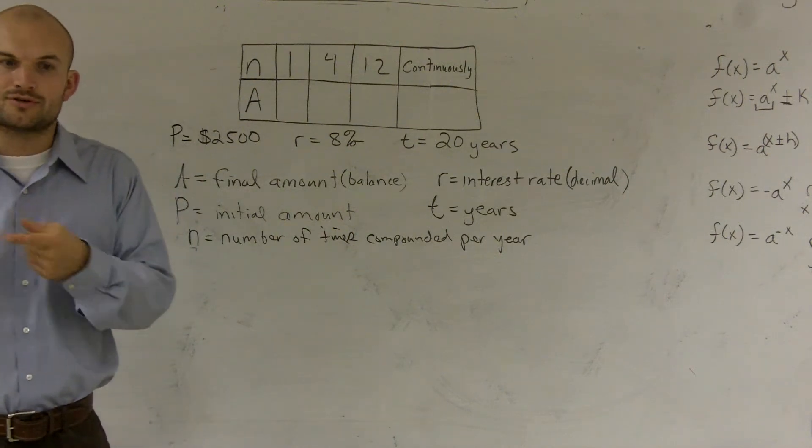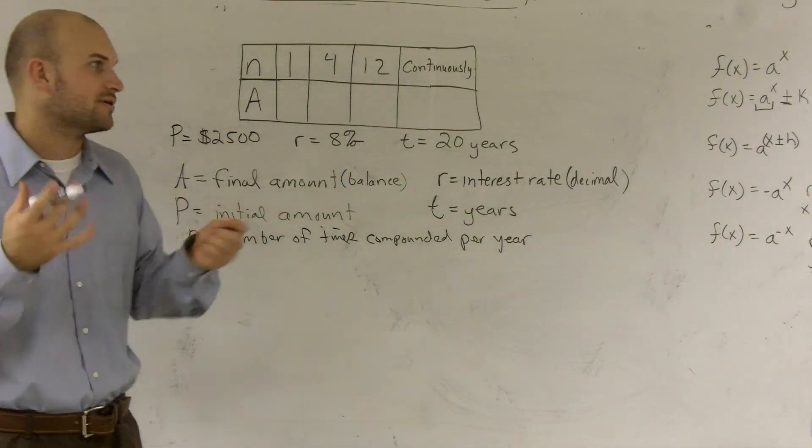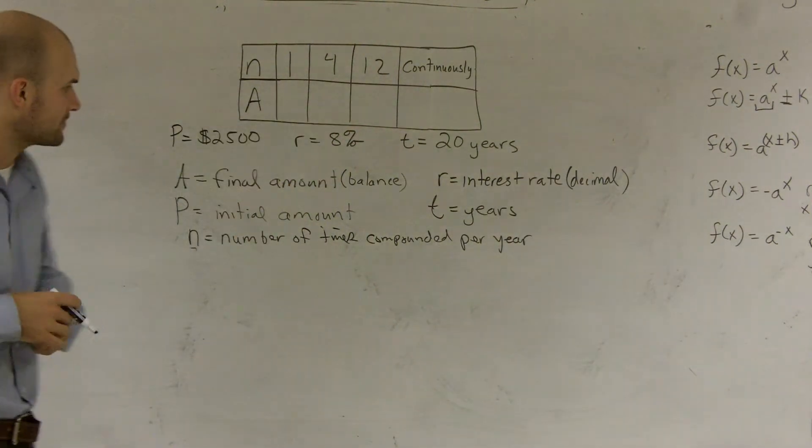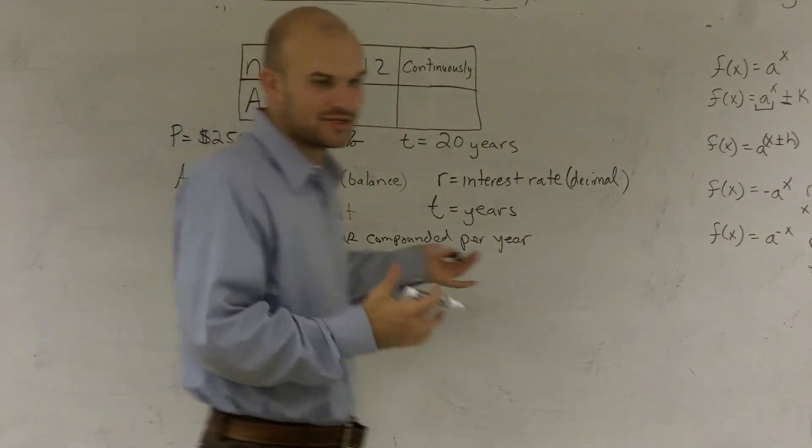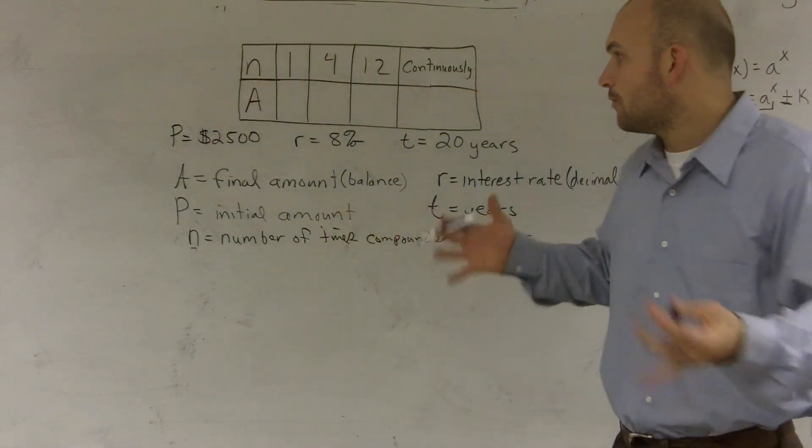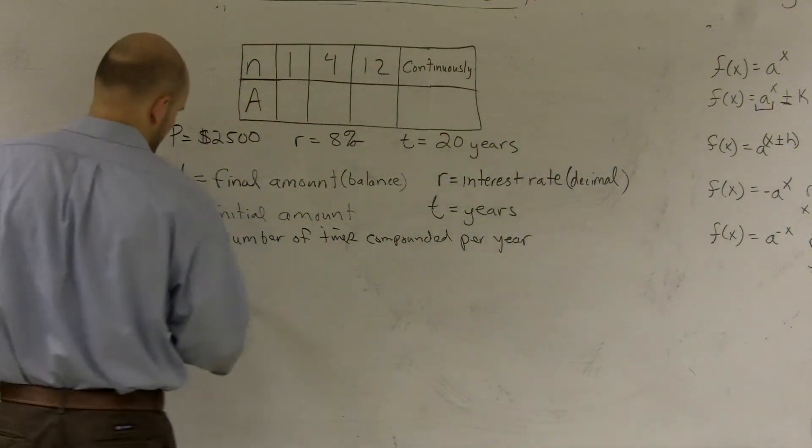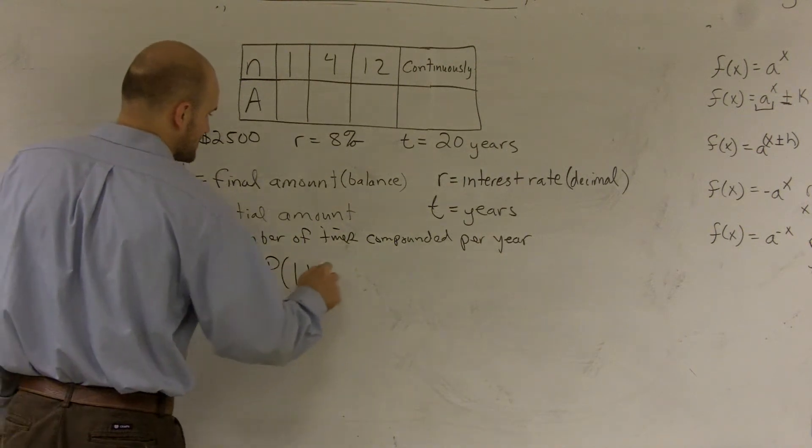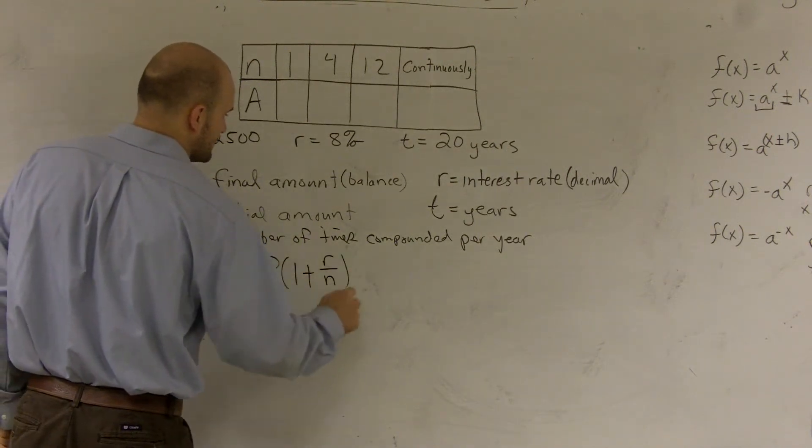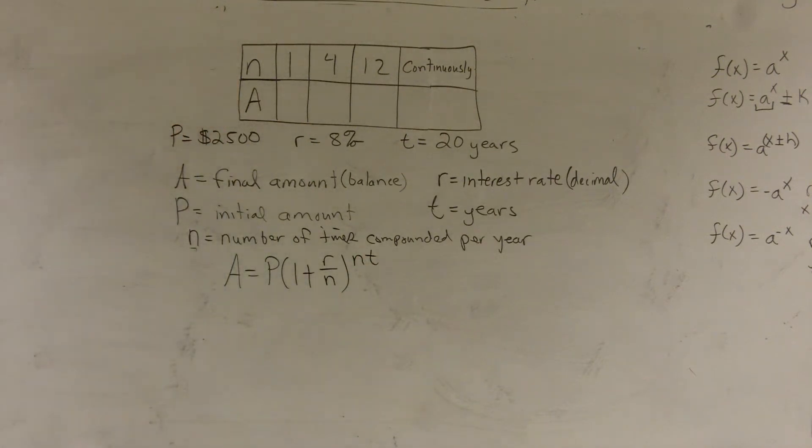And as you keep on getting bigger and bigger, you're going to get closer and closer. You can go minutes. You can go seconds. And you keep on getting small enough, we actually approach a number that's going to help us get to continuously. So what are we going to use now? We have all this information. We have all the data that we need. What do we do with it? Well, there's a formula, which we call our compound interest formula, which represents A equals P times 1 plus R over N raised to the N times T power.